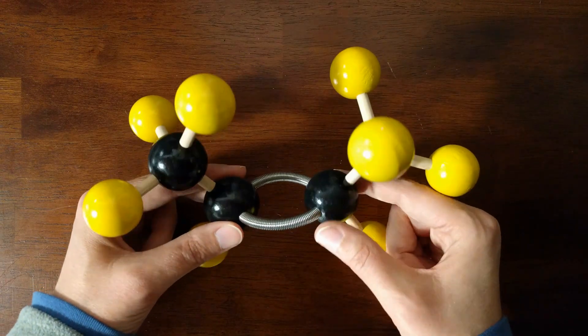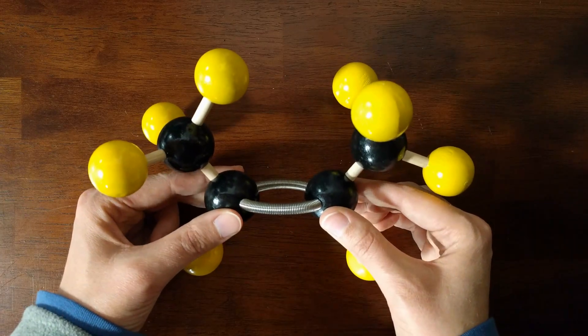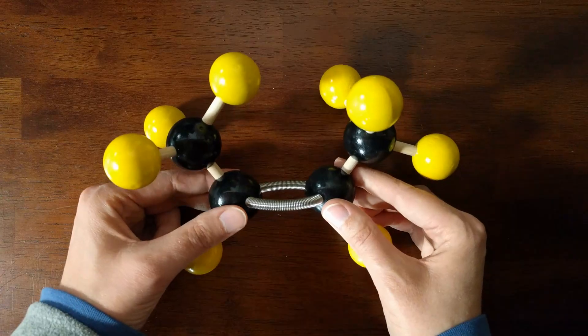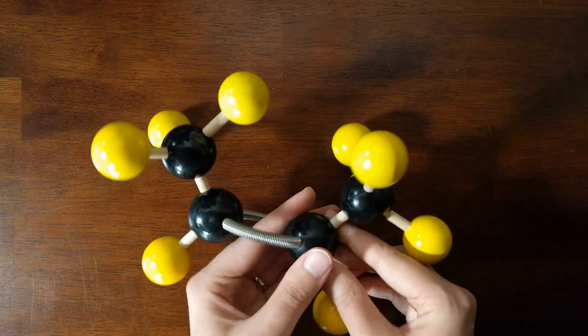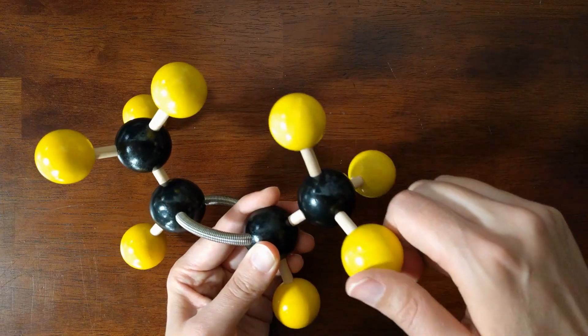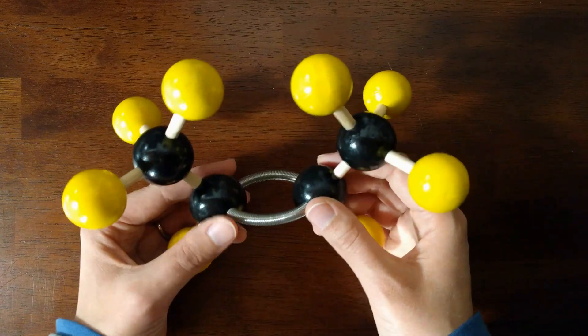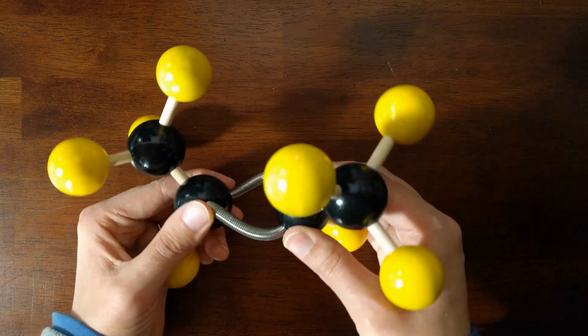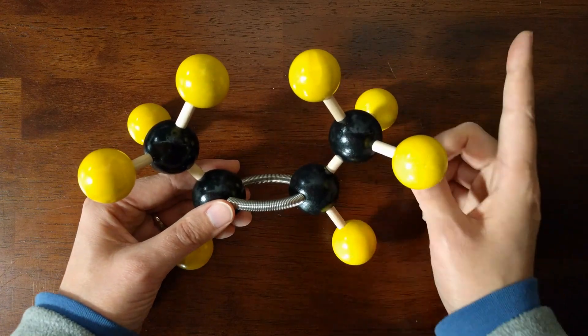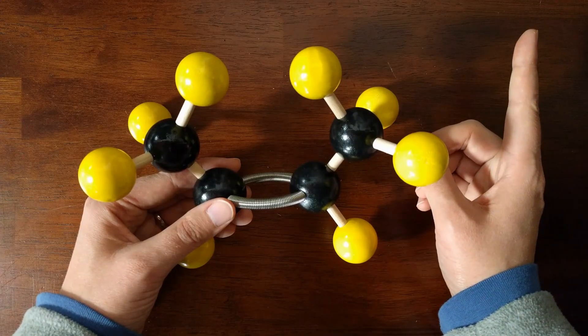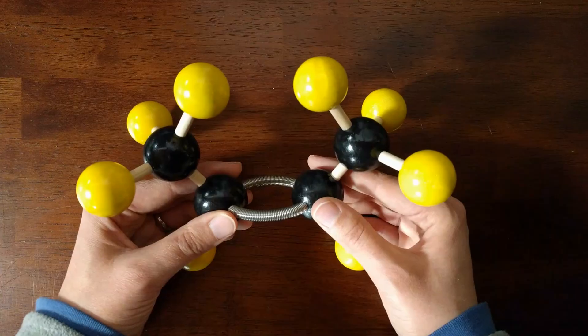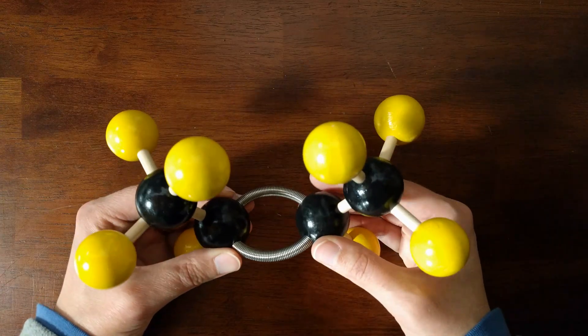But there is a double bond between carbons two and three. The important thing to know is that double bonds and triple bonds cannot freely rotate. So when we were talking about conformations and single bonds rotating, that was only true of single bonds. If you want more information about the difference between conformations and isomers, I do have a video about that topic.